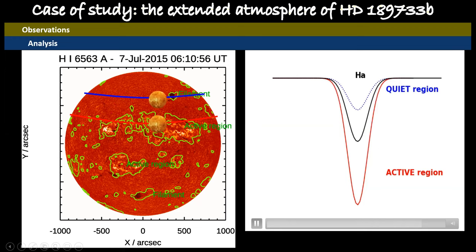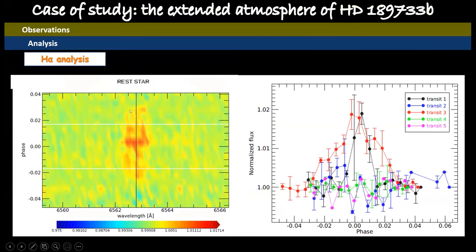So we have monitored also the behavior of the H-alpha line. This is a strong signal in emission at the position of the H-alpha line in the stellar rest frame. And this is due to two nights out of five.